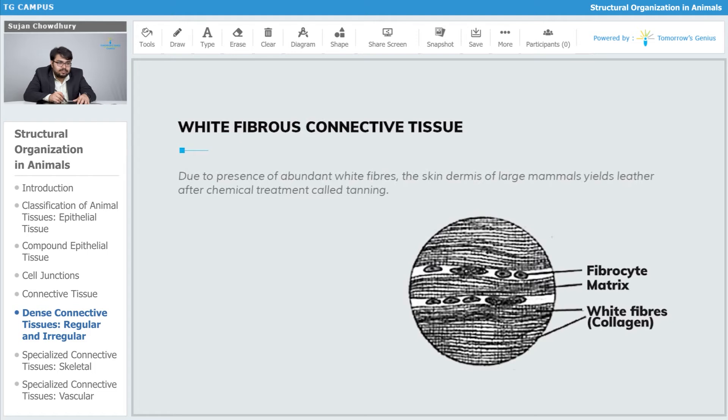Due to the presence of abundant white fibers, the skin dermis of large mammals yields leather after chemical treatment called tanning. After treating the skin with chemicals in a process called tanning, we observe leather from the skin.